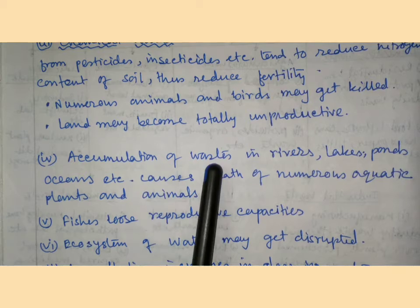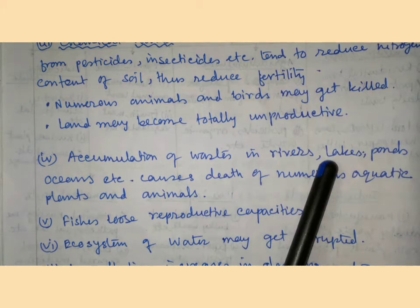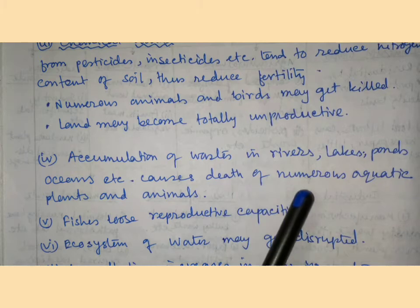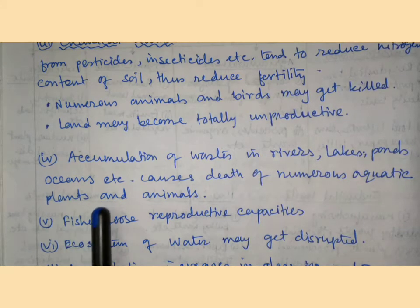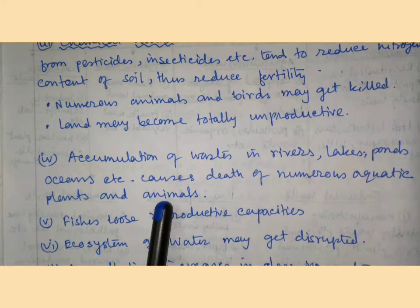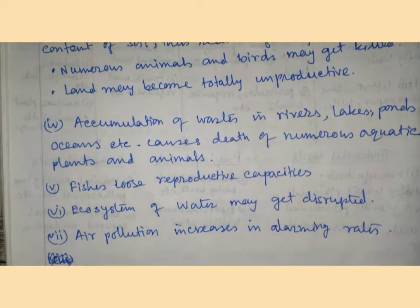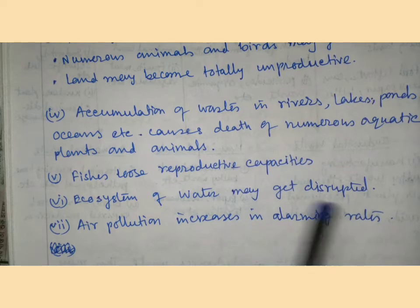Accumulation of waste in rivers, lakes, ponds, and oceans causes the death of numerous aquatic plants and animals. Fish lose their reproductive capacity, and the ecosystem of water bodies may get disturbed.